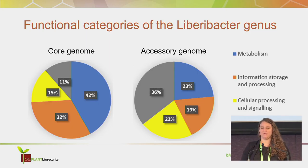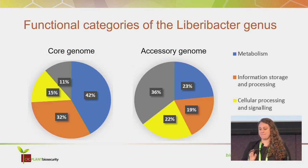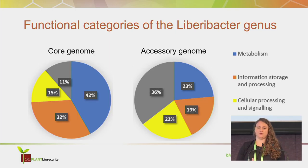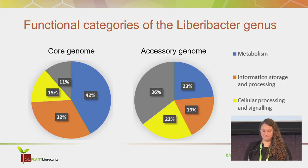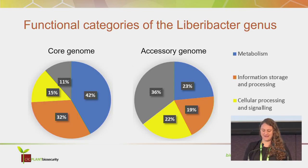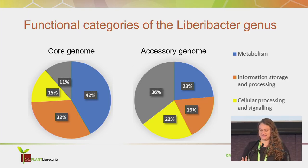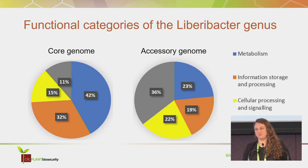I separated the core genome from the accessory genome — anything not present in all 20 strains. I assigned functional categories to get an idea of what these Liberibacters are doing. In the core genome, the majority of function is dedicated to metabolism, with the main priority being energy conservation and production. Closely followed by that, information storage and processing is another priority, with translation, ribosomal structure, and biogenesis being prominent. Very little energy is dedicated to secondary metabolite biosynthesis, which was expected.